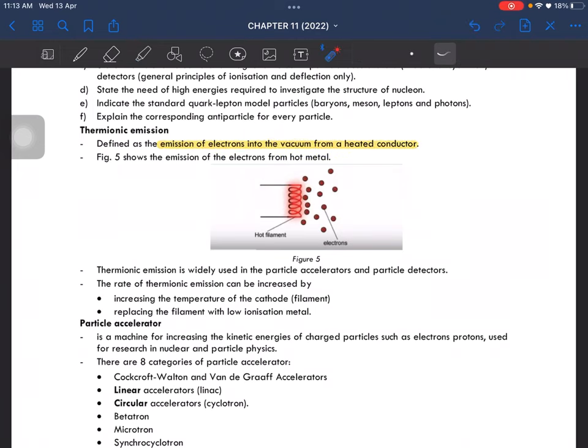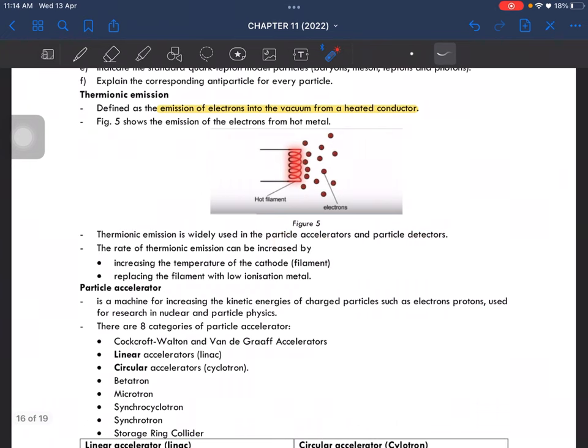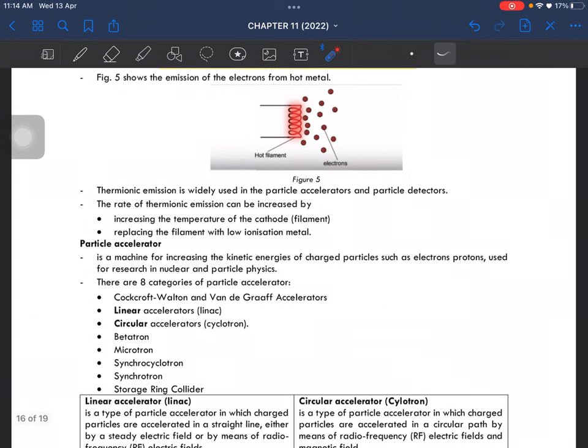Thermionic emission is widely used in particle accelerators and particle detectors. The rate of emission can be increased by increasing the temperature of the cathode, which is the filament, or by replacing the filament with a low ionization metal. A particle accelerator is a machine that increases the kinetic energy of charged particles.